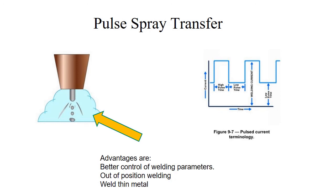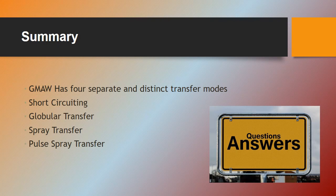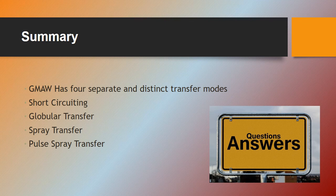We covered the four distinctive sounds that are associated with each one of the transfer modes. Short-circuiting sounds like frying bacon, globular sounds kind of nasty, spray transfer sounds almost like a hissing sound, and pulse spray transfer sounds like the buzzing of a bee or standing next to a transformer, an electrical transformer. Just wanted to throw some sound context into the four transfer modes.